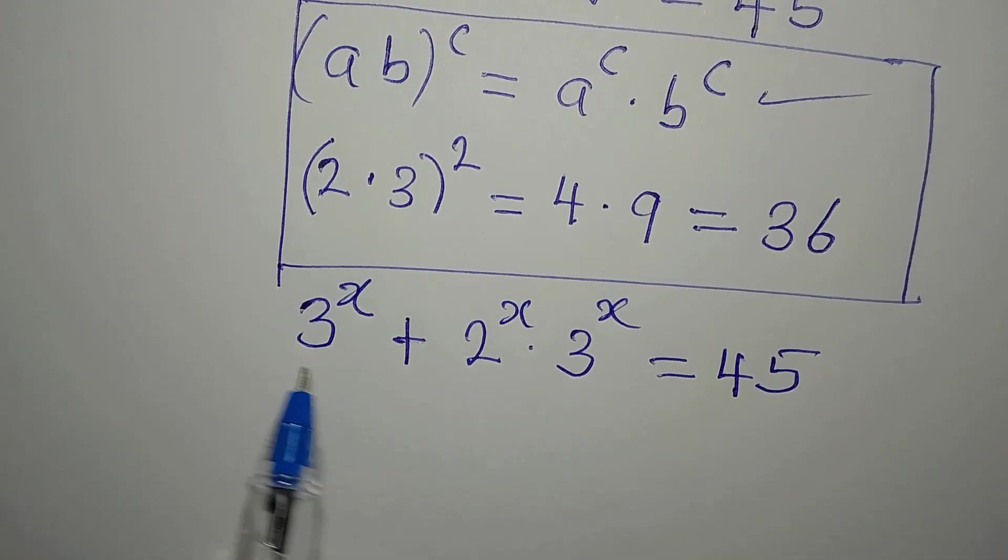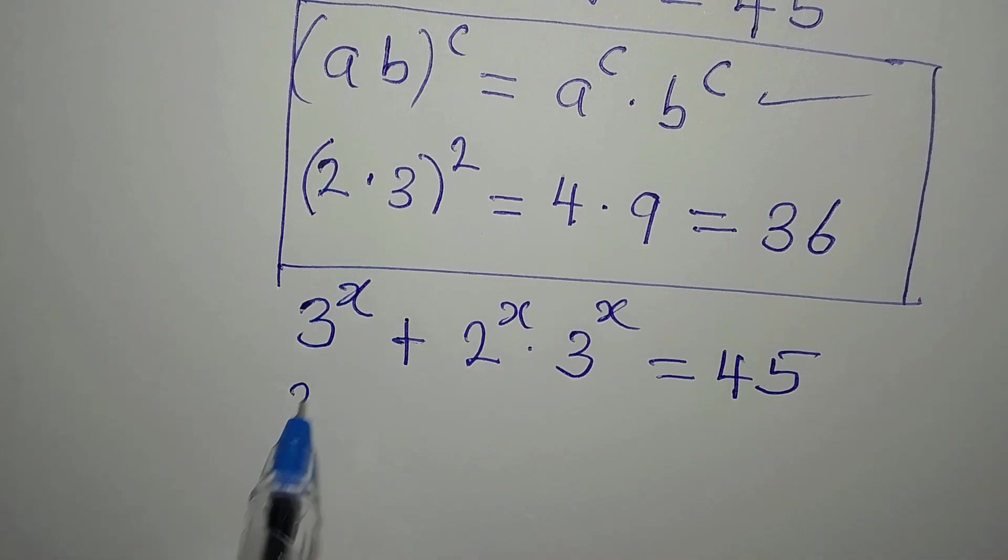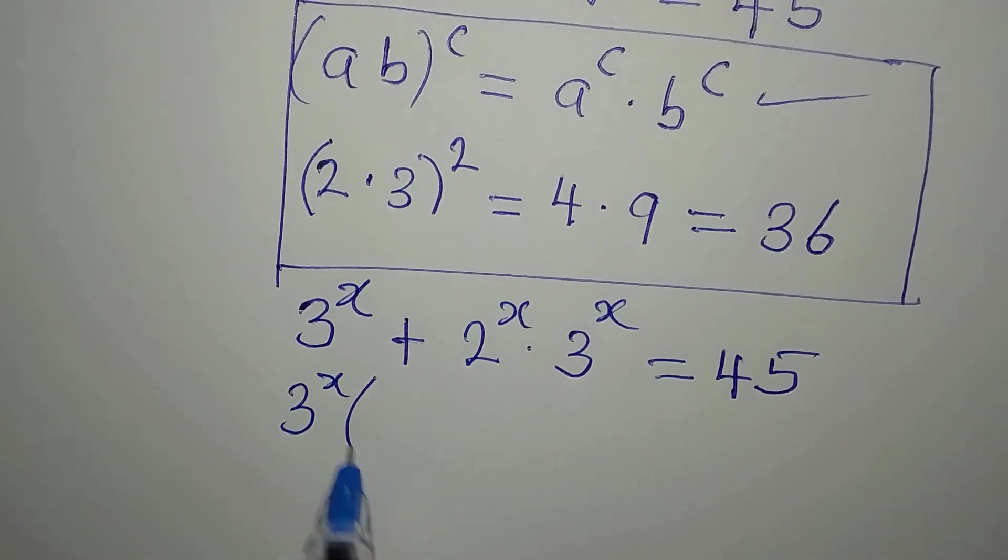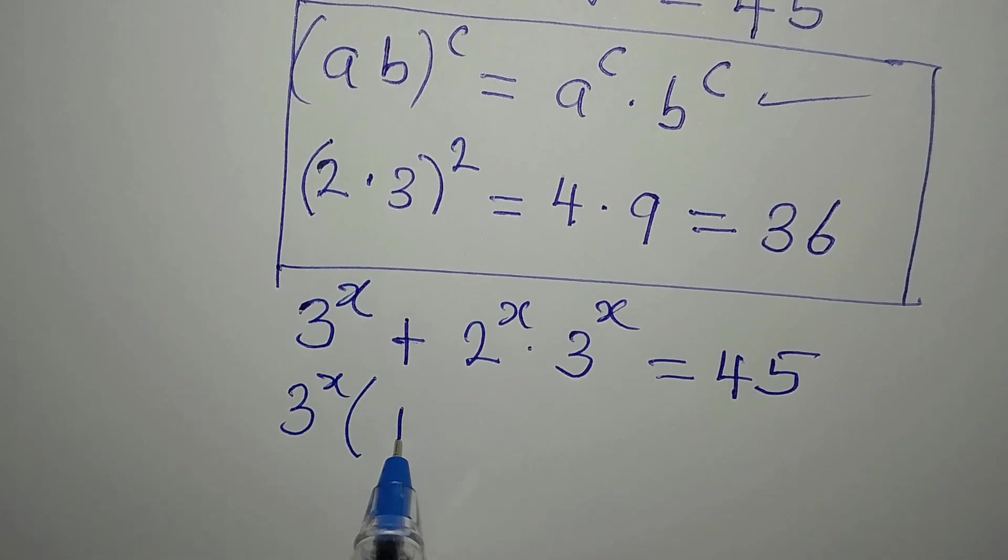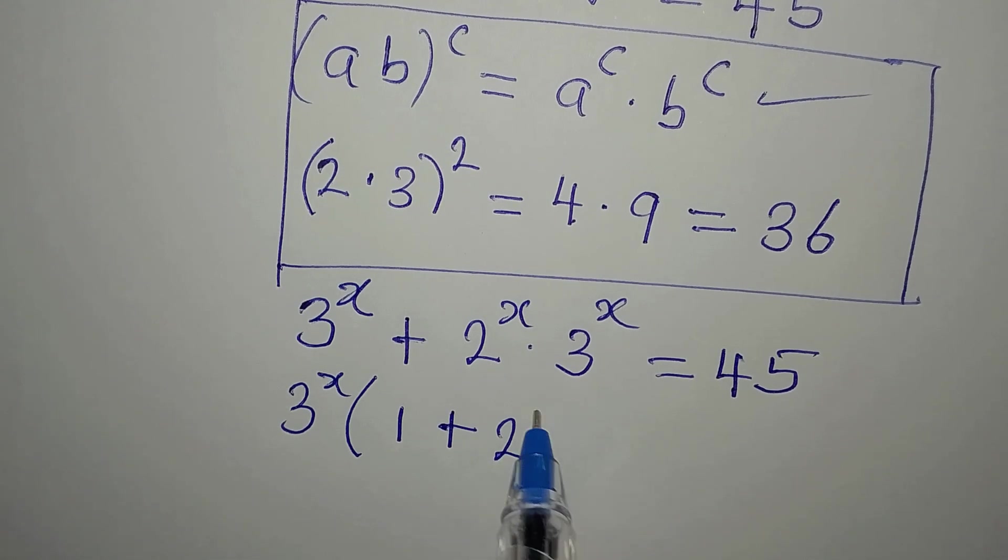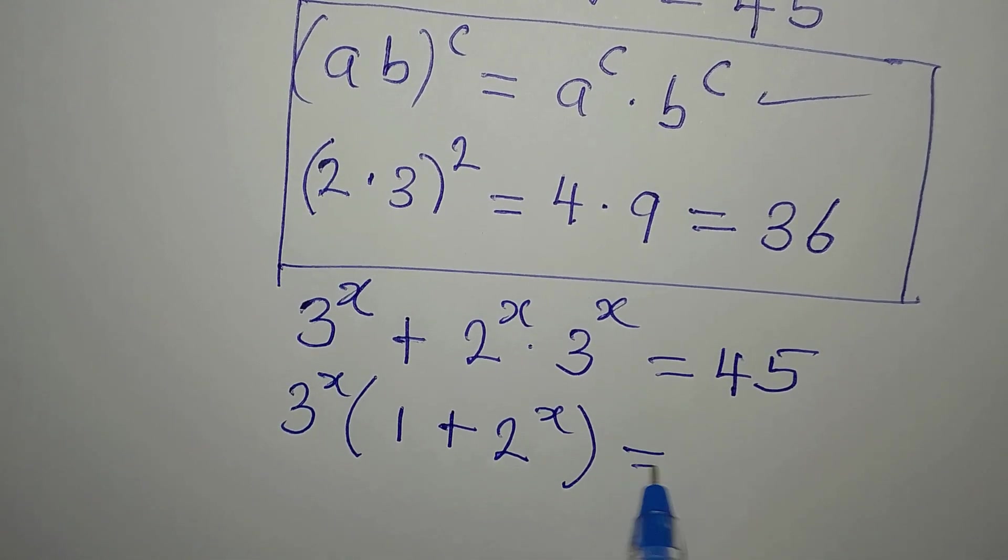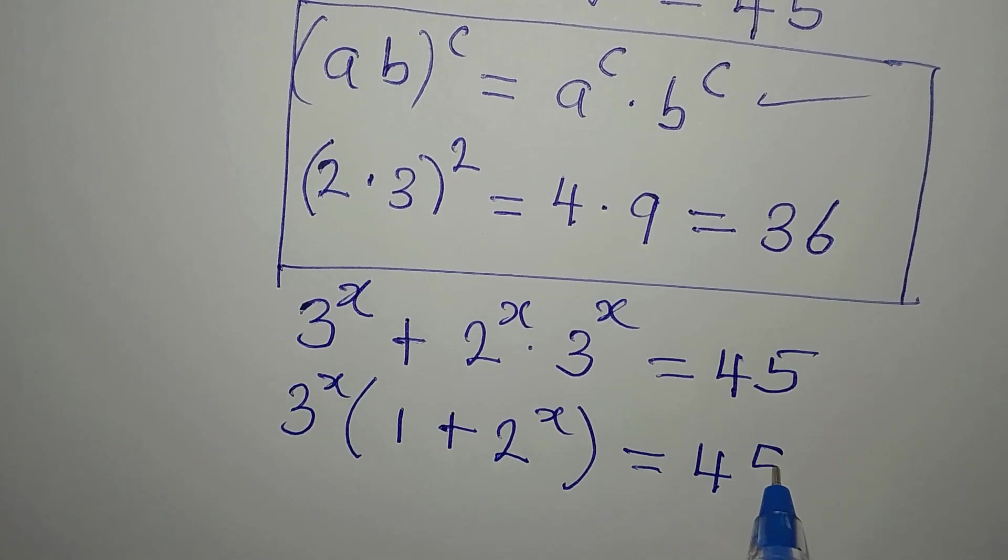Now, if you look at these two, something is common, so we are going to factorize. 3 to the power of x is a common factor. So here we are going to have 1 plus here we have just 2 to the power of x, and this is equal to 45.